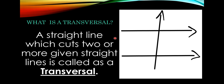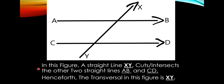Here is another example. In this figure, a straight line XY cuts or intersects the other two straight lines AB and CD. The line XY intersects line AB at this point and line CD at this point. Hence, the transversal in this figure is the line XY.